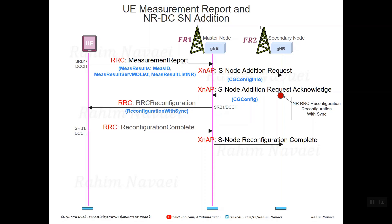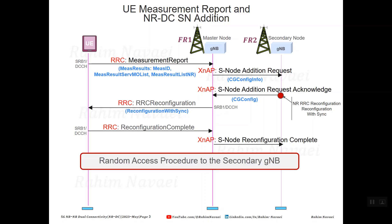The device will know how to access the target NR cell using RRC reconfiguration with SYNC and will accept the message by sending an RRC reconfiguration complete message. The master gNB will finish the procedure by sending a secondary node reconfiguration message to the secondary node via the XN interface. Using the information in NR RRC reconfiguration with SYNC, the device will run the random access procedure to access the secondary gNB.